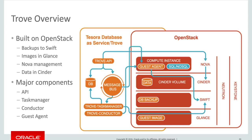The major components of Trove itself include the API endpoint, which translates incoming requests and passes them on to the Task Manager. The Task Manager generally passes tasks off to one of two things: to OpenStack itself — for example, to Nova to provision a new machine with given specs, or to Cinder to create a new volume.